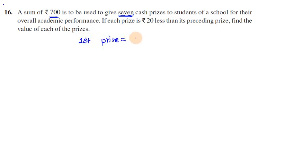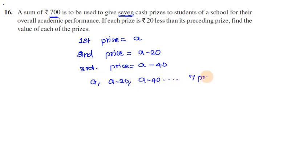First prize is 'a'. Second prize is less than the first price, so a minus 20. Third prize is less than the second price, so a minus 40. So this is a, a-20, a-40. There are 7 prizes, so now we have to add all 7 prizes.